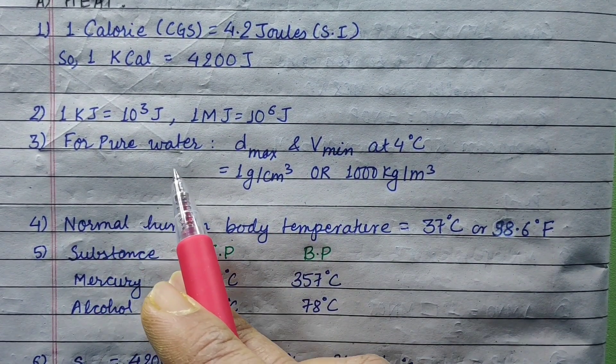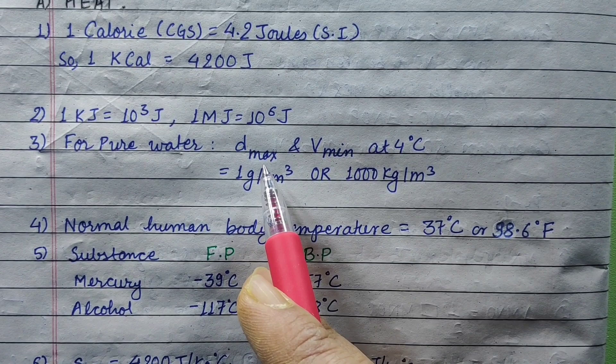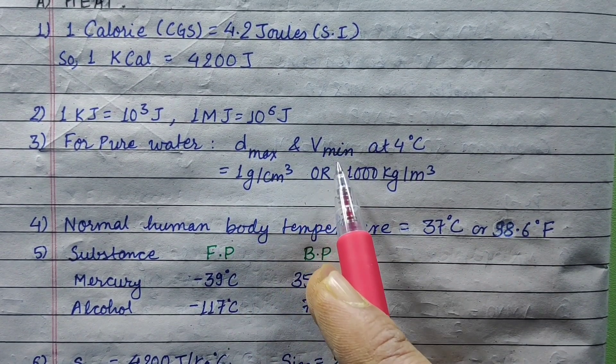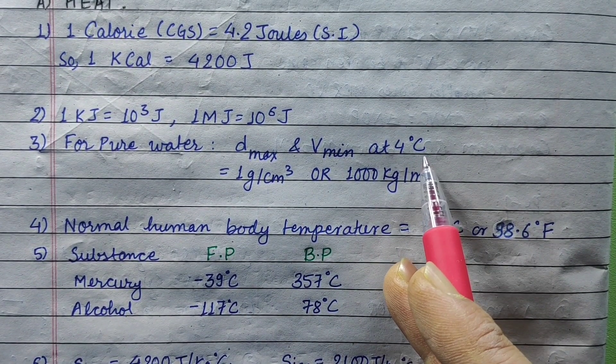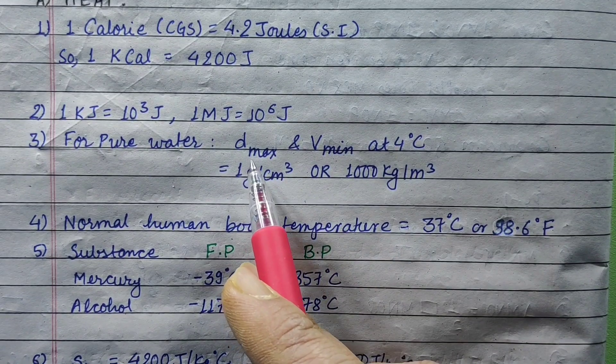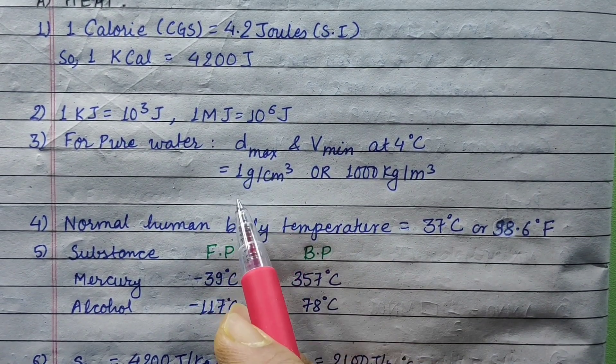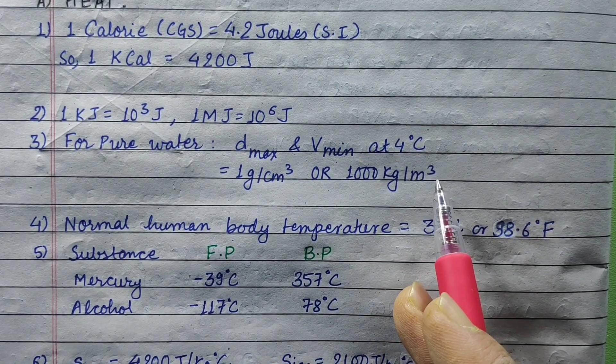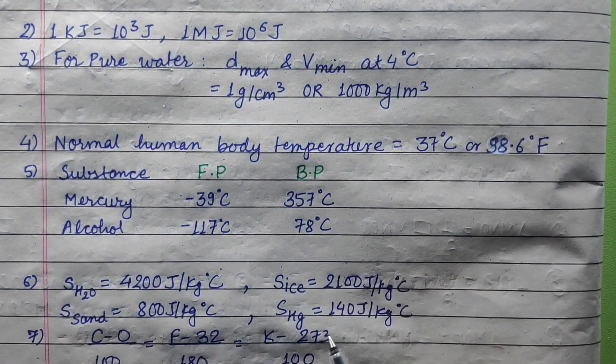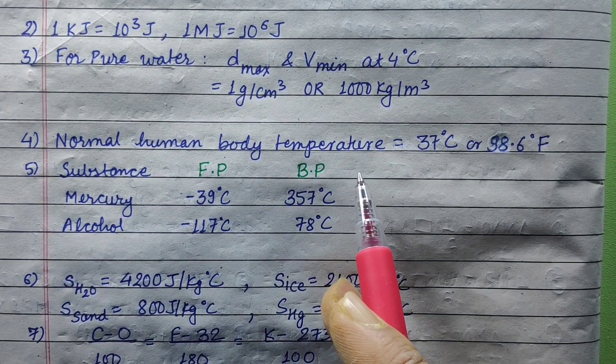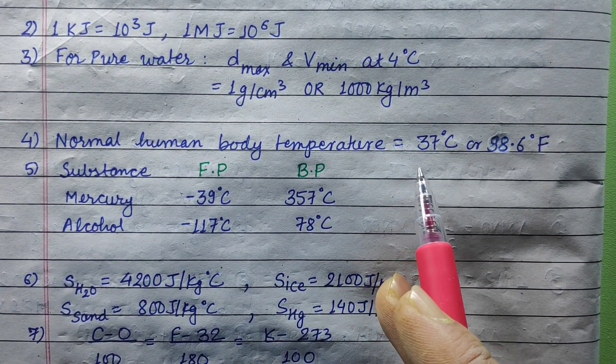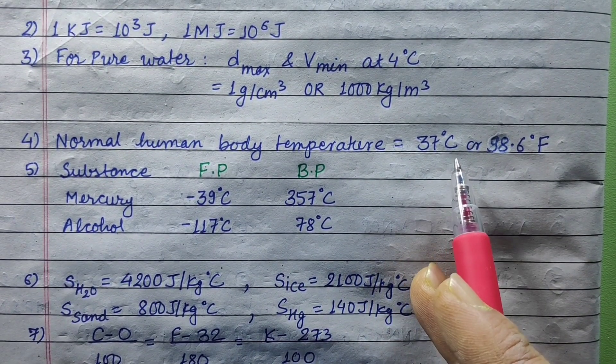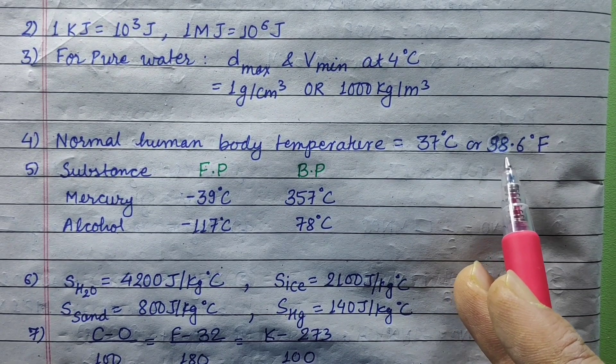For pure water, density is maximum and volume is minimum at 4 degrees Celsius. At 4 degrees Celsius, density of water is 1 gram per cubic centimeter or 1000 kg per meter cube. Normal human body temperature is 37 degrees Celsius or 98.6 degrees Fahrenheit.